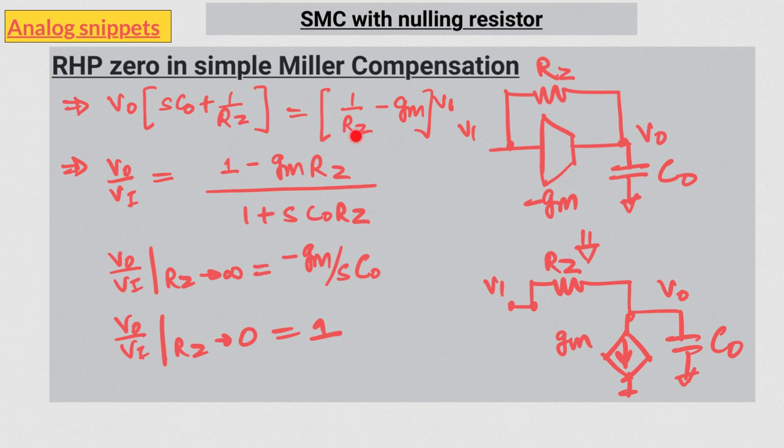But you can see that in between, something interesting happened. As we reduce RZ, the gain becomes from inverting to non-inverting. And this change happens when gmRZ equals one. In fact, at that condition, gain is precisely zero.